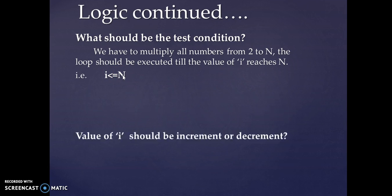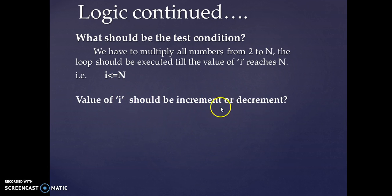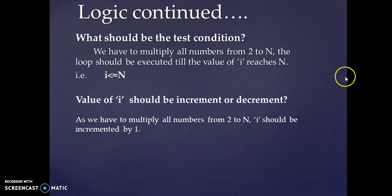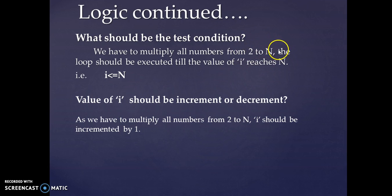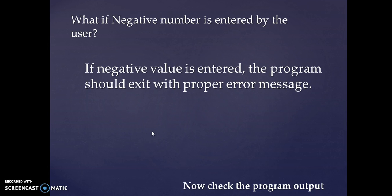The value of i should be incremented, not decremented, because we move from 2 to n. Since n is a positive number greater than or equal to 2, we increment i by 1 each time. Finally, if a negative value is entered by the user, the program should display an error message and exit.